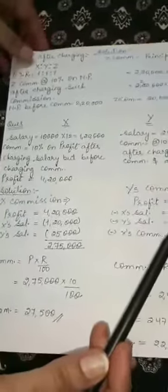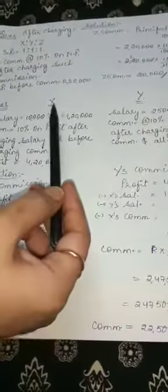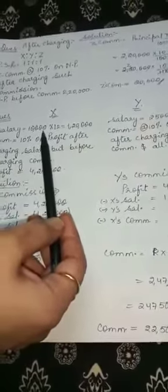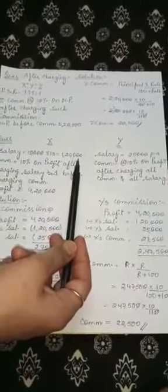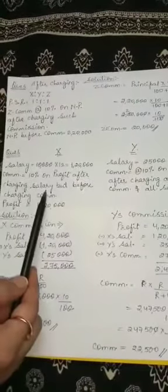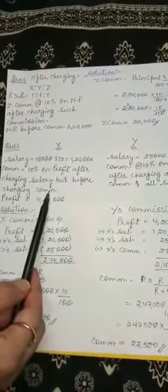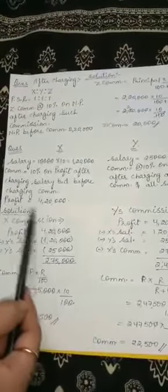Now one more slightly complicated question. X and Y are two partners. X is to get a salary of ₹10,000 per month — we convert this to per year by multiplying by 12, giving ₹1,20,000 per annum. X is also entitled to commission at the rate of 10% on net profit after charging salary but before charging such commission. The profit for the year is ₹4,20,000.